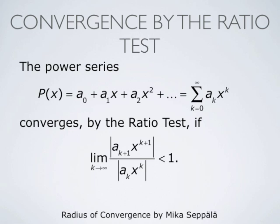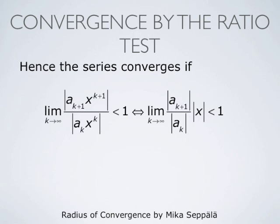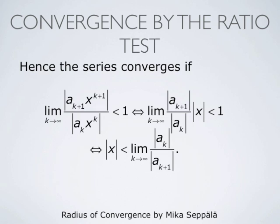We observe that the expression |a_k times x^k| simplifies — we may cancel x^k from the denominator. In the numerator we have x^{k+1}, and canceling x^k leaves just x. So the condition from the ratio test simplifies to: the limit as k goes to infinity of |a_{k+1}|/|a_k| times |x| must be less than 1. Since x does not depend on k, we may take |x| outside the limit, and the series converges if and only if |x| is less than the limit as k goes to infinity of |a_k|/|a_{k+1}|, assuming this limit exists.